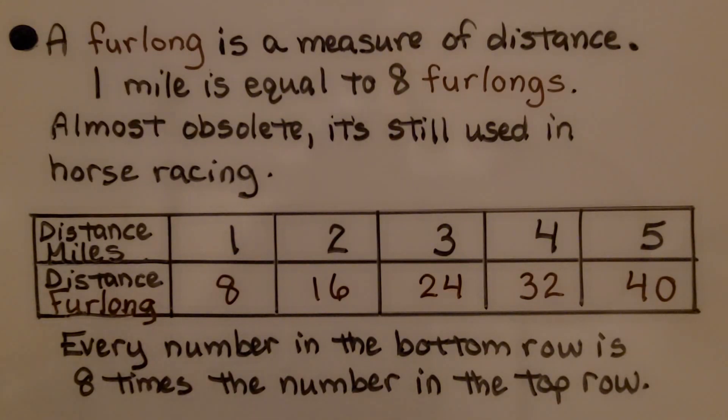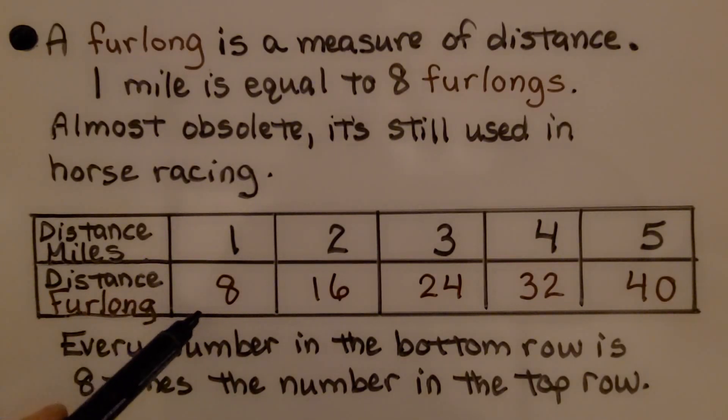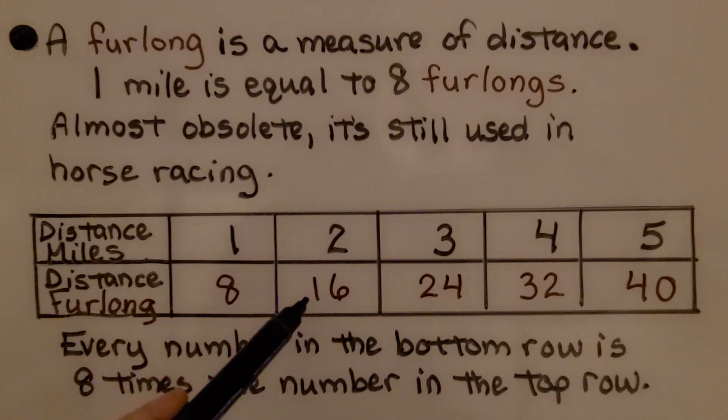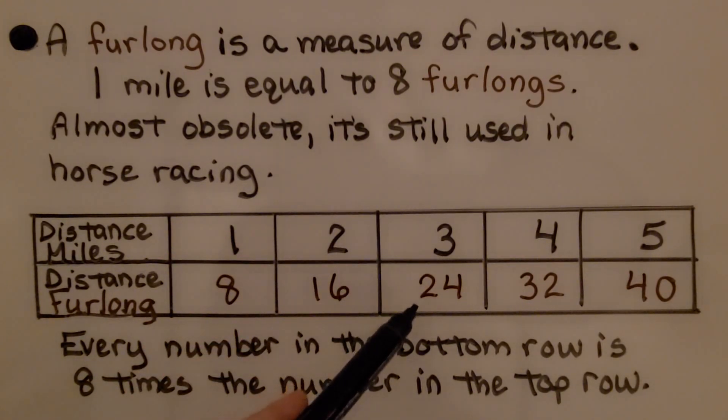So here we have a table for distance in miles and distance in furlong, and 1 mile is 8 furlongs, which means 2 miles is 16 furlongs, 3 miles is 24 furlongs. Every number in the bottom row is 8 times the number in the top row.